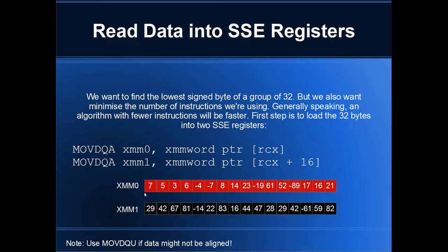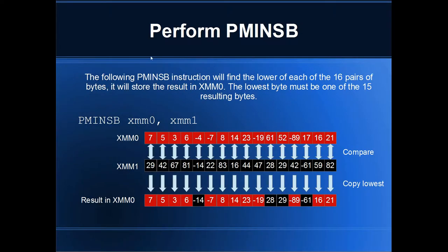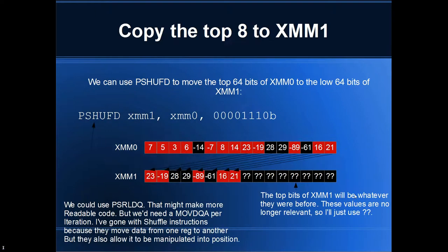After we read the data, we compare the 16 bytes in XMM0 with the 16 bytes in XMM1 using PminSB — packed minimum of signed bytes. All this instruction does is compare each pair of bytes and store whichever is the smallest in XMM0. So 7 is the smallest out of 29 and 7, 5 is the smallest out of 42 and 5, et cetera. What's important is that the smallest of the original 32 bytes must be one of these 16.